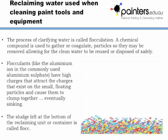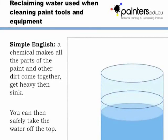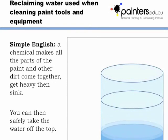These charges cause the particles to clump together, eventually sinking. The sludge left at the bottom of the reclaiming unit or container is called flock. To explain this in simple English: a chemical makes all the parts of the paint and other dirt come together, get heavy, and then sink because of gravity. You can then safely take the water off the top.